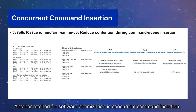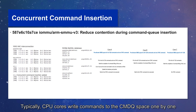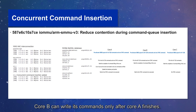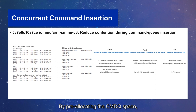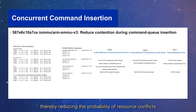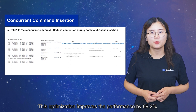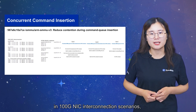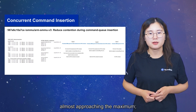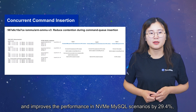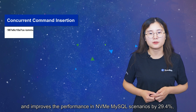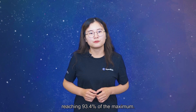Another method for software optimization is concurrent command insertion. Typically, CPU cores write commands to the command queue space one by one and in sequence — core B can write its commands only after core A finishes. By pre-allocating the command queue space, multiple cores can write commands concurrently, thereby reducing the probability of resource conflicts and improving efficiency. This optimization improves performance by 89.2% in 100G NIC interconnection scenarios, by 29.4%, reaching 93.4% of the maximum.